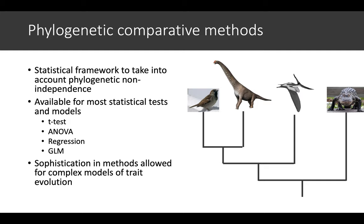These phylogenetic comparative methods are available for most statistical tests and models. For instance, there's a phylogenetic version of t-test, phylogenetic ANOVA, phylogenetic regression, and phylogenetic generalized least squares.